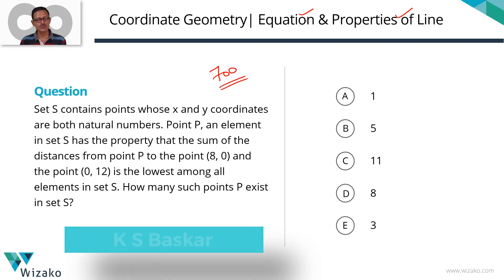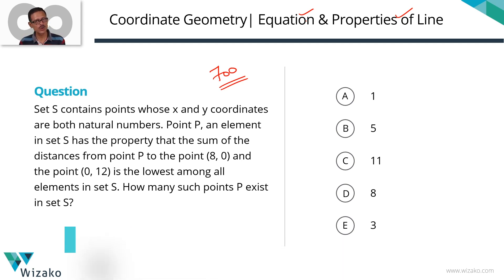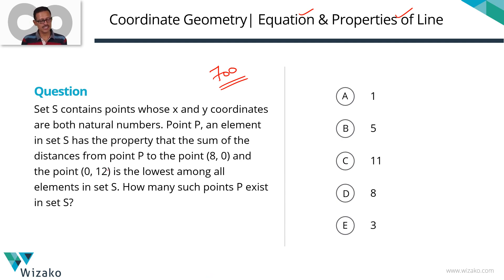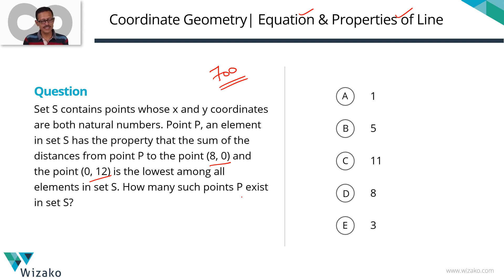Set S contains points whose x and y coordinates are natural numbers. Point P, an element in set S, has the following property: the sum of the distances from point P to (8, 0) and (0, 12) is the lowest among all elements found in set S. How many such points P exist is what we need to find out.